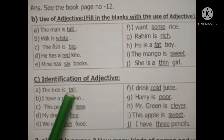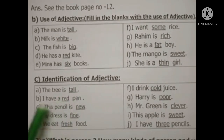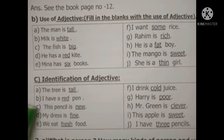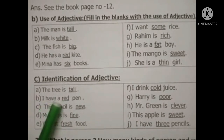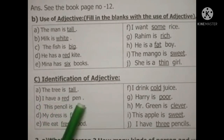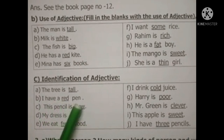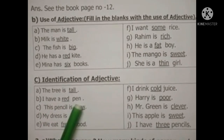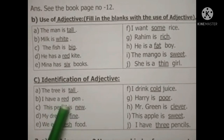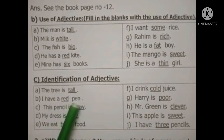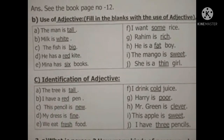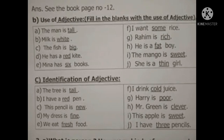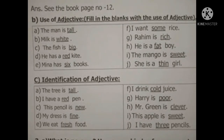এখন টিটা হচ্ছে adjective। তাহলে দেখো, (A) তে কী আছে: 'I have a red pen' — মানে আমার একটি লাল কলম আছে। তো এখানে 'red' টা হচ্ছে adjective, কারণ red হচ্ছে কলমের কী — কলমটা কী রঙের, সেটা বোঝাচ্ছে।